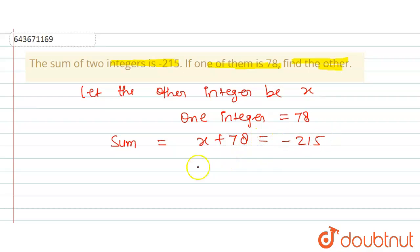So x will be equal to minus 215, and 78 goes to the right-hand side with a negative sign.